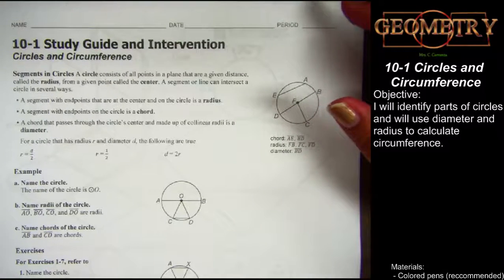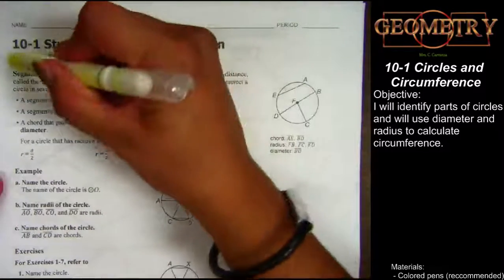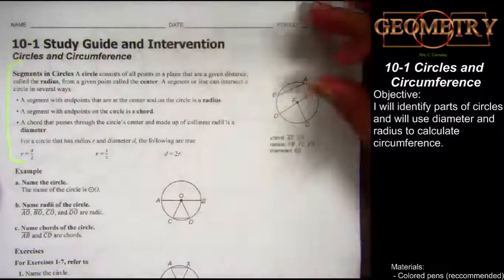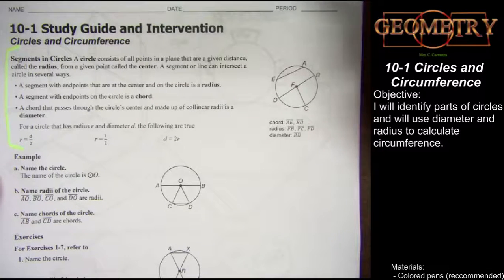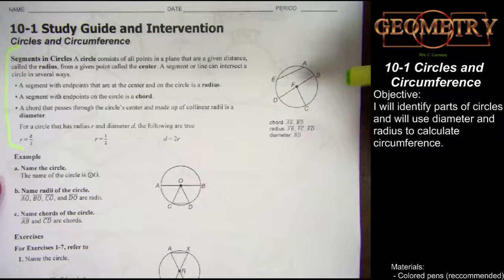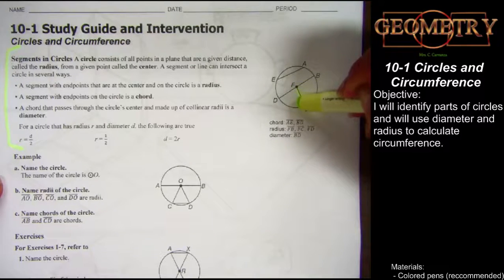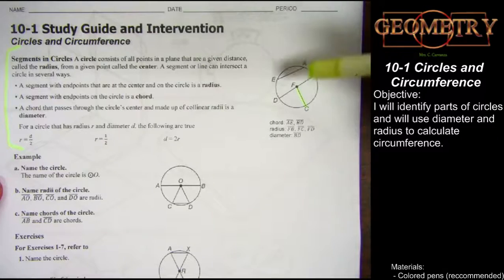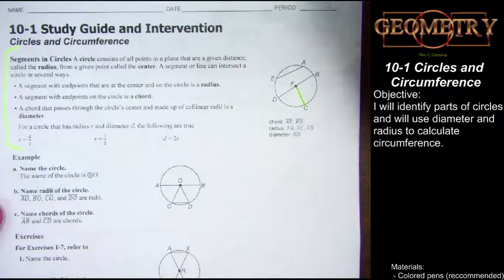Please notice that at the top of every study guide provided, you have a little bit of information. It says that circles consist of all the points in a plane that are a given distance from a center. That given distance is called the radius, and so here in this circle, from the center F out to the edge, that distance is the radius — so FC would be the radius of this circle.